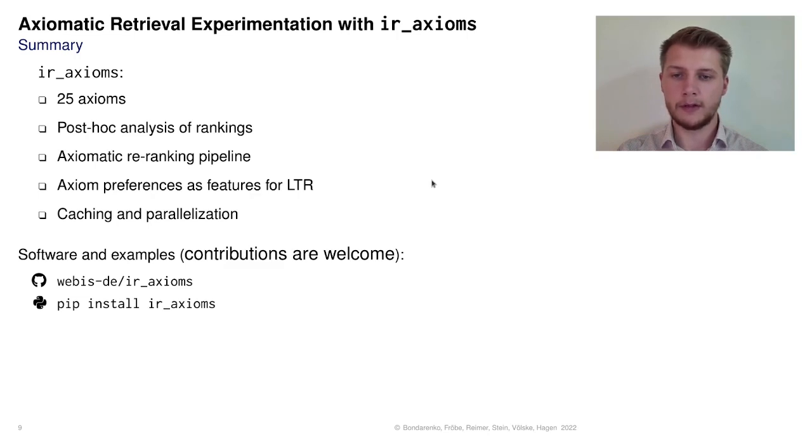With built-in caching and parallelization, we can speed up the computation of axiom preferences. IR axioms is free and open-source software and we gratefully accept contributions on GitHub. We invite you to install our Python package and try out IR axioms today. Thank you very much for listening and a big thanks to SIGIR for giving me a student travel grant.